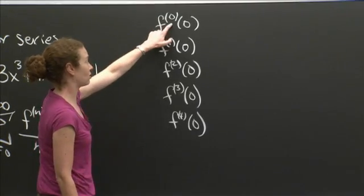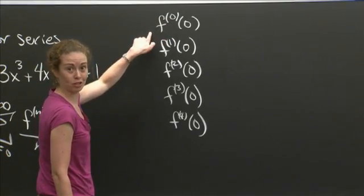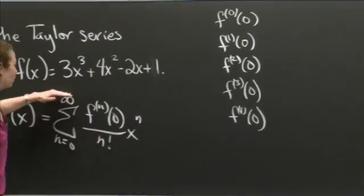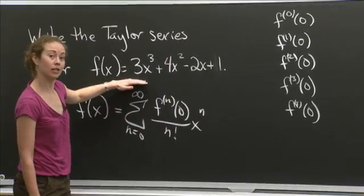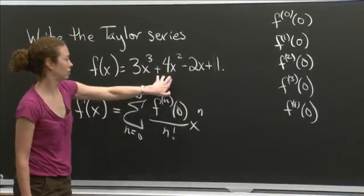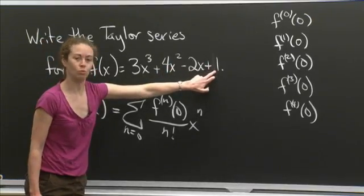OK, so let's take the function. The 0th derivative of f is just the function itself. So let's come back here. What is the function? If I evaluate it at x equals 0: 0, 0, 0, 1. I get 1.